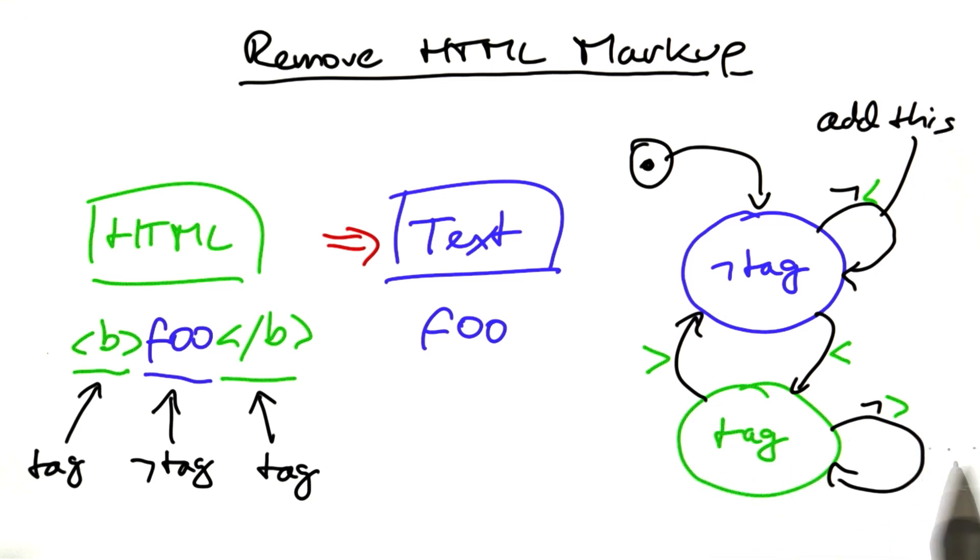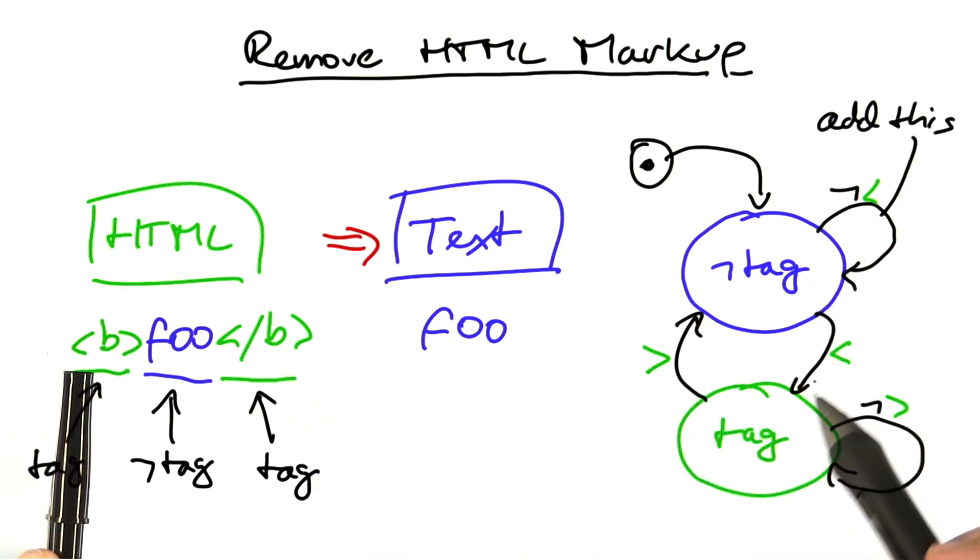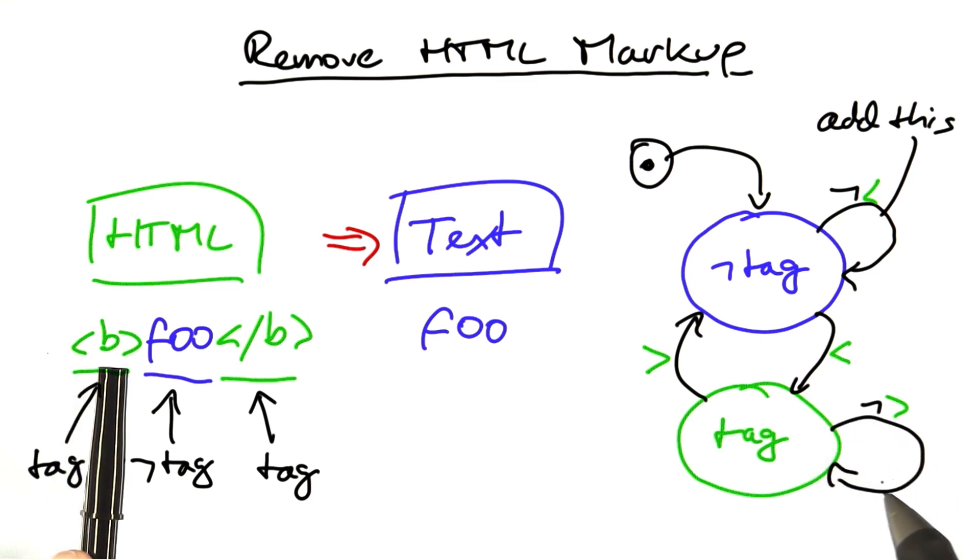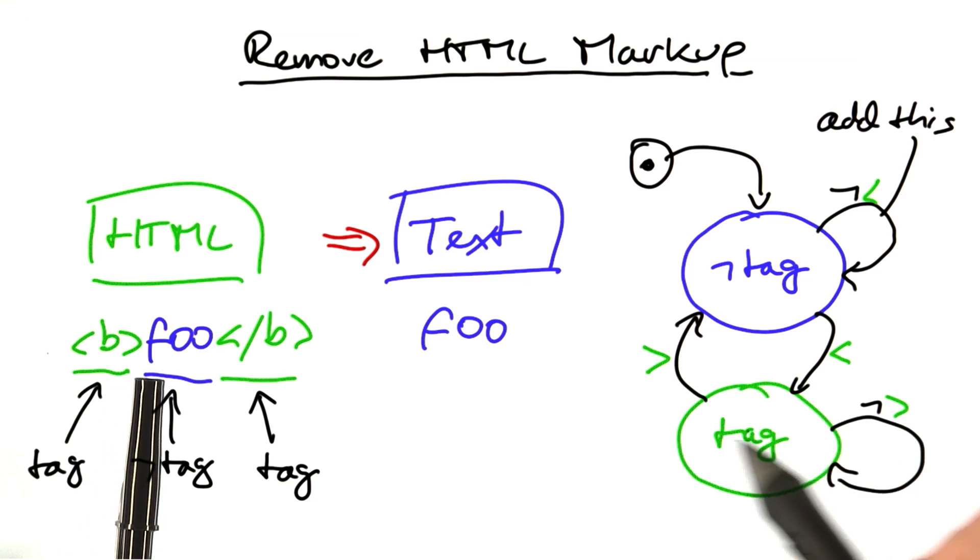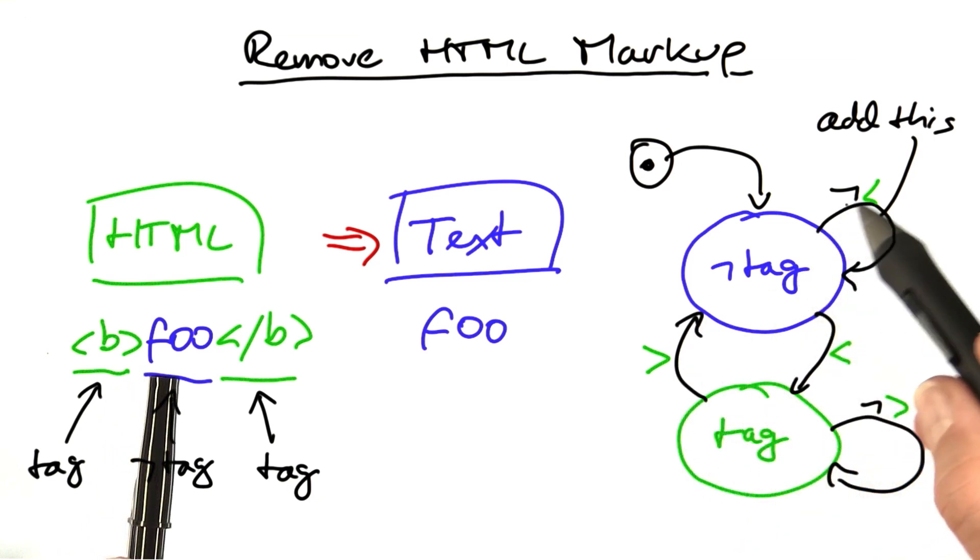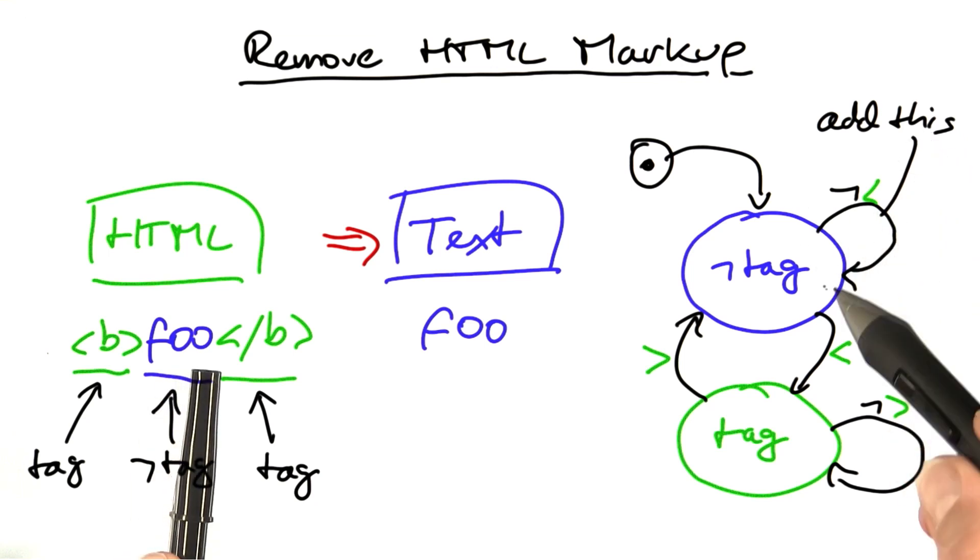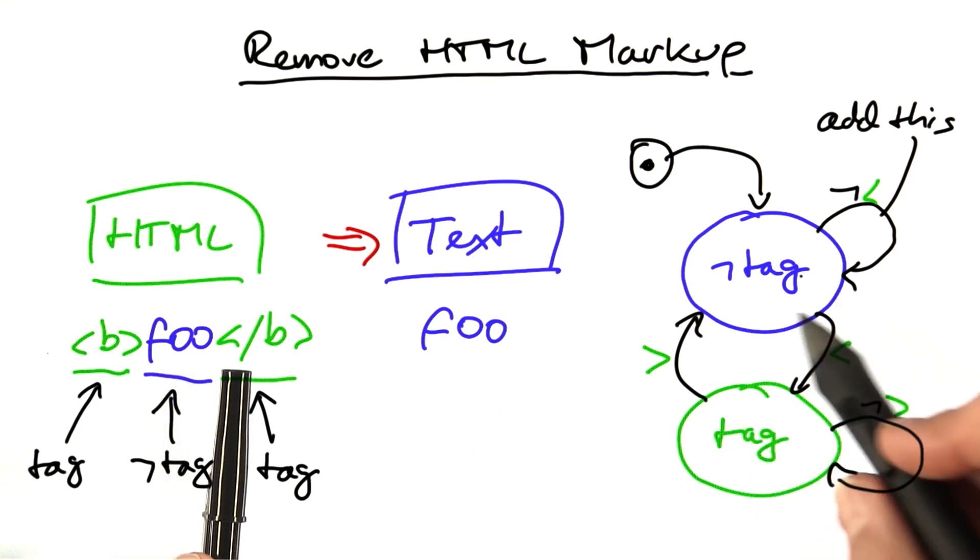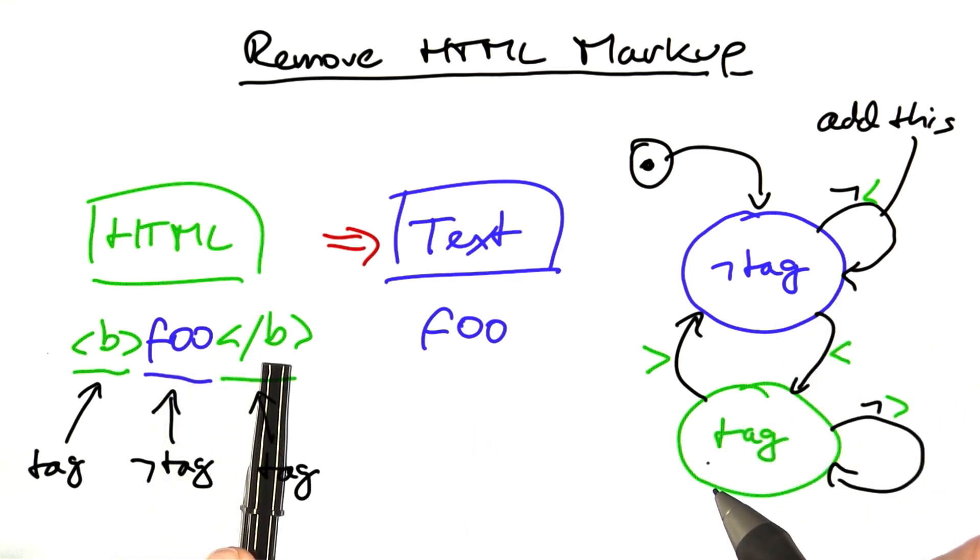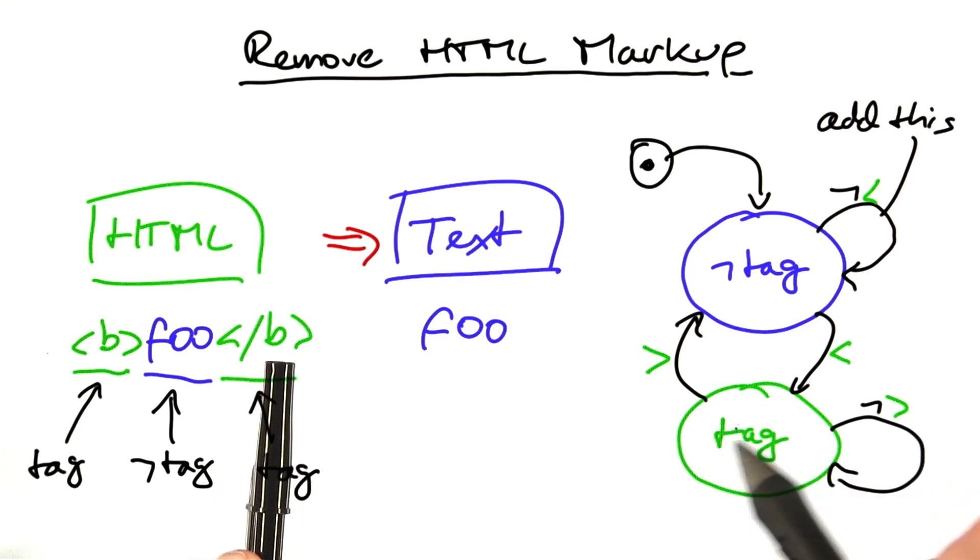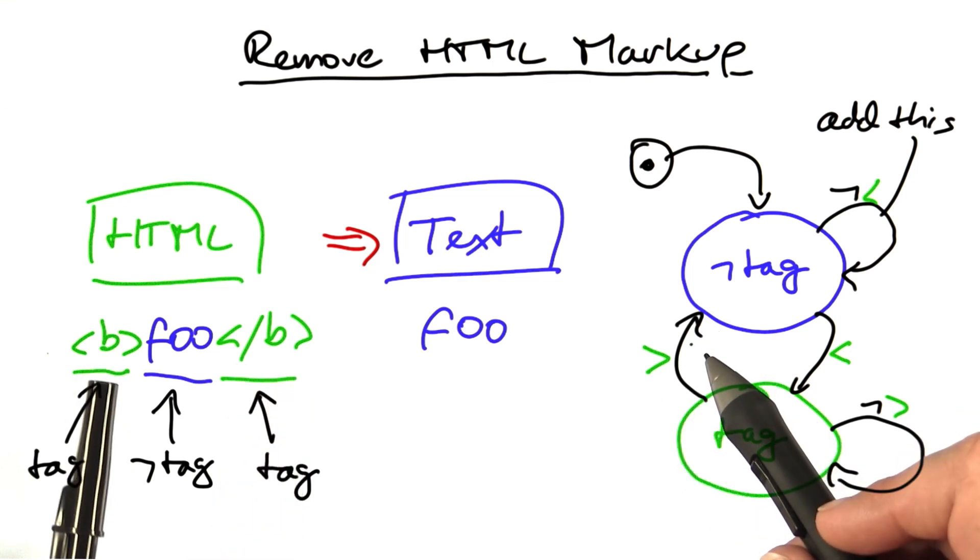So when we are processing this HTML input, initially we're in non-tag mode. Now we see the beginning of an HTML markup, we go into tag mode. We see the B, which is not the end of a tag. Then we get the end of the tag, go back into non-tag mode, see the F, add this, see the O, add this, see the O, add this again. So our output now is F, O, O. And now again, we see the beginning of a tag, where we process, or more specifically, where we ignore all characters up to the closing tag. And then our output is indeed the text inside the HTML markup.